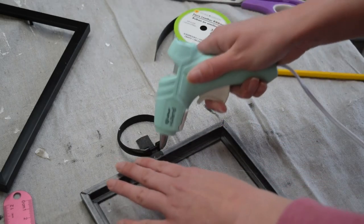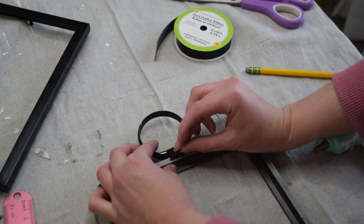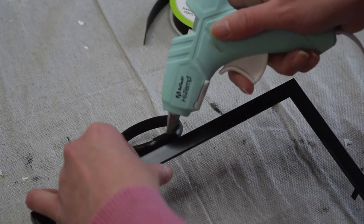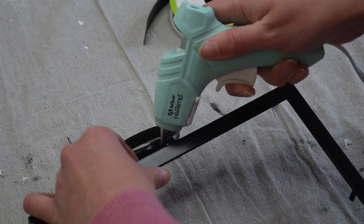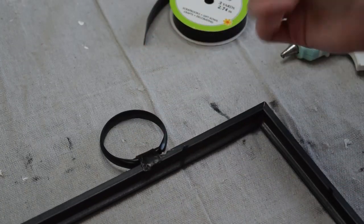Then taking that tail, I added some more hot glue and created a loop around the shower curtain ring with that leather ribbon. And then for some extra security, I flipped the frame over to the front, added some extra hot glue so that this ring would sit very nicely on the top of the frame.